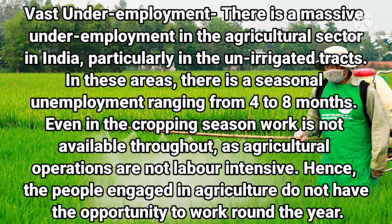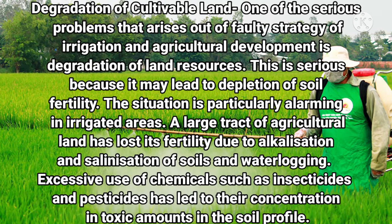Next is degradation of cultivable land. The degradation of land resources is a serious problem caused by faulty strategies of irrigation and agricultural development, leading to depletion of soil fertility. Excessive use of chemicals such as insecticides and pesticides has made the soil toxic. Absence of leguminous plants and decrease in the duration of fallow land has reduced natural fertilization of soil.